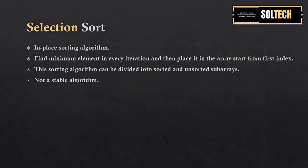First we will see what is selection sort. Selection sort is an in-place sorting algorithm. This means that the items that need to be sorted occupy the same storage as the original. What selection sort does is it finds the minimum element in the array in every iteration and then places it at the current index, swapping both values. This sorting algorithm can be divided into sorted and unsorted sub-arrays.